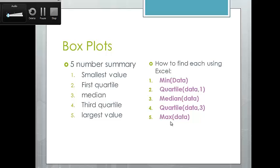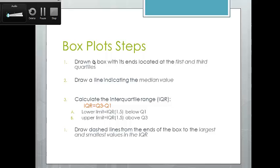The minimum and maximum are automatically calculated in descriptive statistics, or you can use the MIN and MAX functions. For quartile one, use QUARTILE with your data comma 1; quartile three, comma 3; and MEDIAN for the median. To draw the box plot: draw a box with its ends at the first and third quartiles, then draw a line indicating the median value within that box — it doesn't necessarily have to be in the middle, since our data could be skewed.